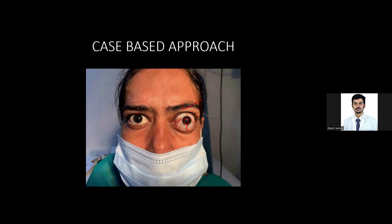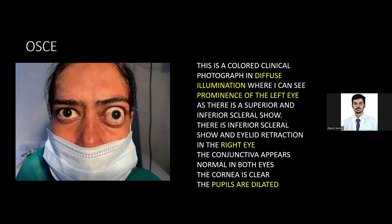The third thing to note is that the pupils are dilated. When starting your description, say: 'This is a clinical colored photograph in diffuse illumination showing prominence of the left eye with superior and inferior scleral show, lid retraction and scleral show in the right eye, and dilated pupils.' You are expected to know the complications of thyroid eye disease, including corneal exposure. So always mention the cornea and the pupils — your examination is incomplete without them whenever you have a case of eyelid, orbit, or pupils.